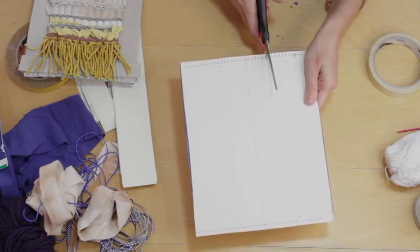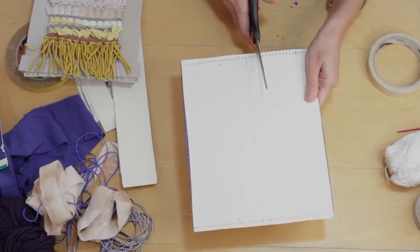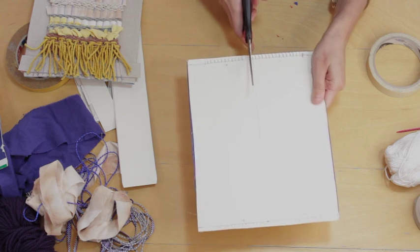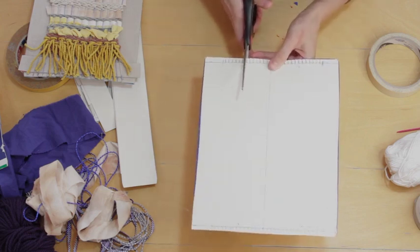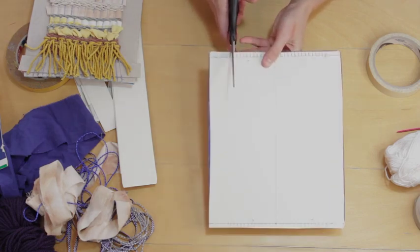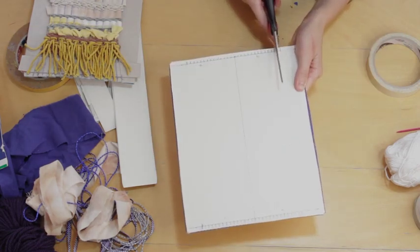Okay, so now what we're going to do is we're going to take our scissors and we're going to snip into each of these little markers, including that one in the center. So just up to your line, no further.